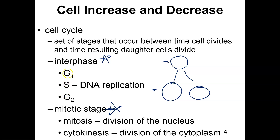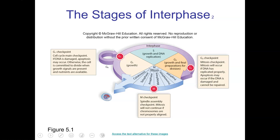We're going to look at each of the steps of interphase and then get into mitosis. The term mitosis means division of the nucleus, and mitosis is followed by cytokinesis, which is the division of the cytoplasm. Interphase takes up the majority of the cell cycle — it is the longest step.